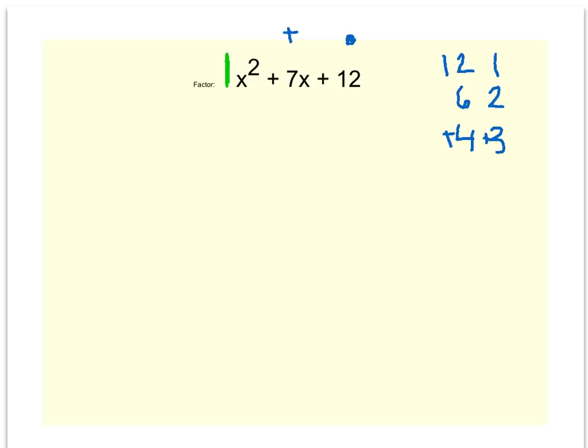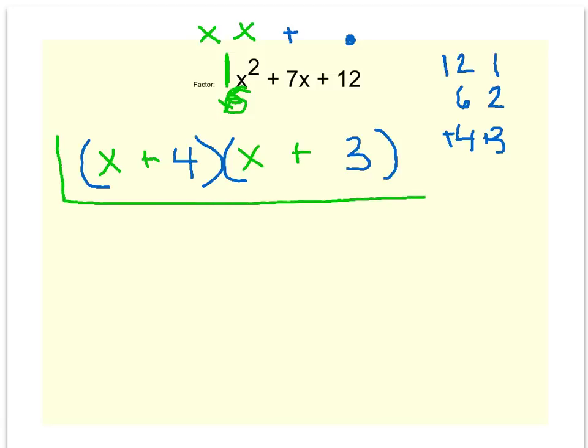So what I'm going to do is factor this into two binomials where the 4 and the 3 go in the second slots each. I have to make sure that 1x squared could be broken down to x and x. So I'll put the x and x in my first slots. We decided the 4 and 3's were positive, so that would be my factored answer.